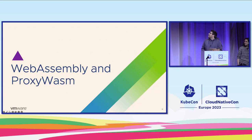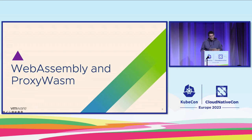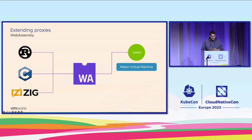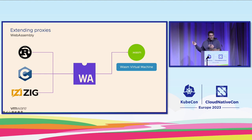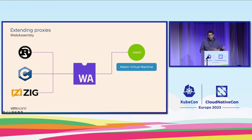Thank you, Angel. So first of all, what is WebAssembly? If we think about several programming languages — Rust, C, or AssemblyScript — and also Go — these can be compiled to WebAssembly. So instead of compiling our program to x86 or ARM64, we can compile it to WebAssembly. The binary we get is a specific, standalone file that can be reused across different environments.